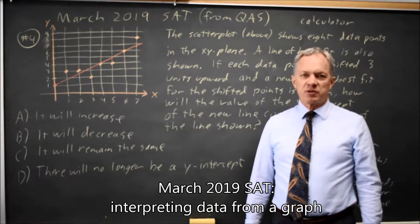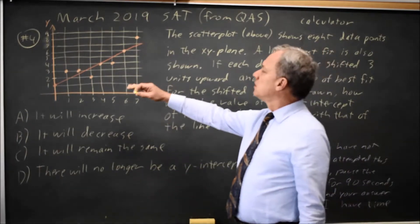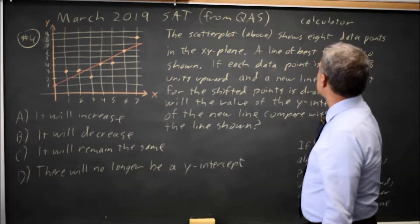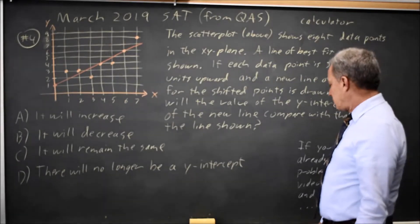This is calculator question number four from the March 2019 SAT. College Board gives us a graph, a scatter plot showing eight data points in the xy plane and a line of best fit. Their question is,